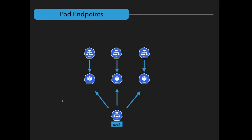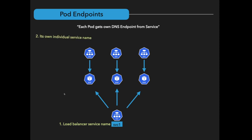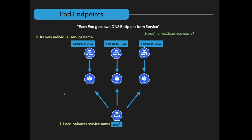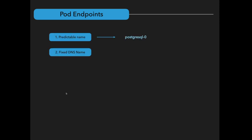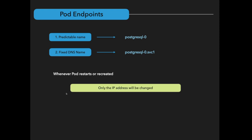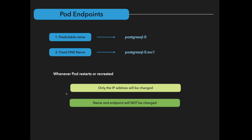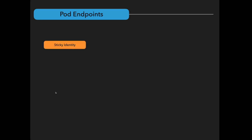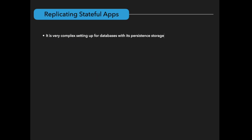All these techniques are in place to protect the state and data of the stateful application. Each pod in a StatefulSet also gets its own DNS name — a DNS endpoint from the service. In addition to the shared service name like a deployment has, each individual pod has its own service name made up of the pod name and service name. These two characteristics — predictable name and DNS name — ensure that whenever a pod dies or is recreated, only the IP address changes, but the DNS name and pod name remain the same. These are immutable characteristics of the StatefulSet component — the sticky identity — which ensures each replica retains its state and role even when it dies or is recreated.